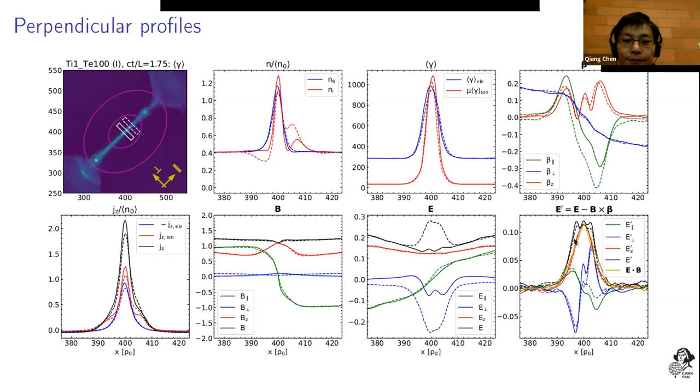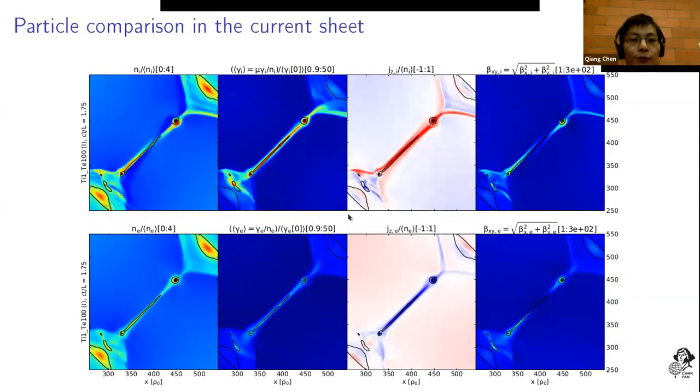We want to understand the difference between ions and electrons. The top panels present the ions with different parameters and the electrons in the bottom. However, it seems that they behave quite similarly.